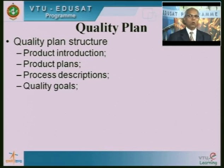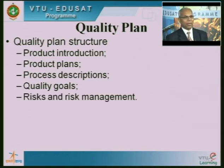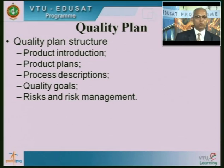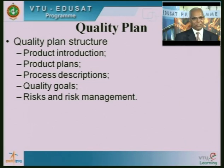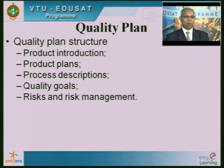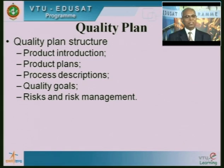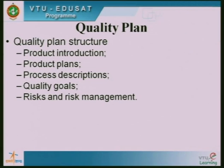The quality plan should also include the quality goals we try to achieve for these processes. Another important point is the associated risks with this development. For example, we might be using a particular software version — say C++ of some version — that may go obsolete. Or a particular tool we want to use may not be available before we start the project. We need to identify all associated risks, define a mitigation plan for each, how we will handle it, and what resources are required for mitigation. All this is documented as part of the quality plan structure.